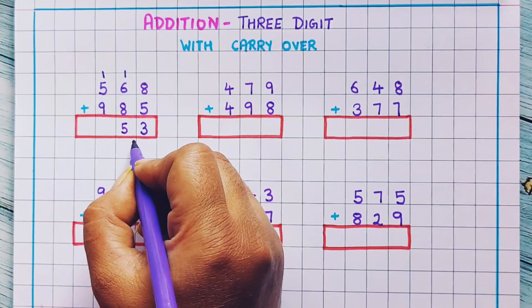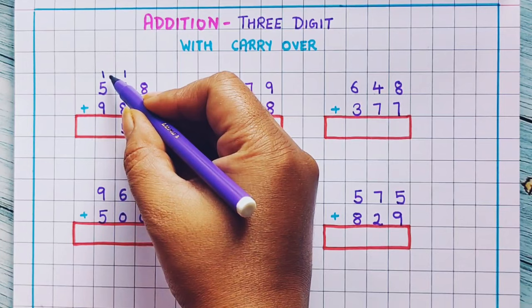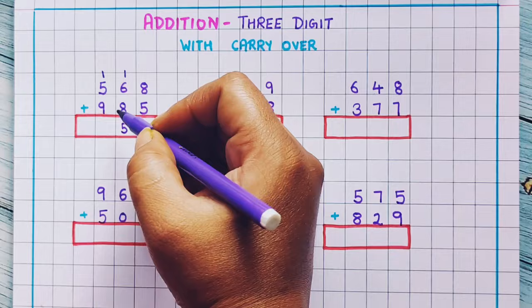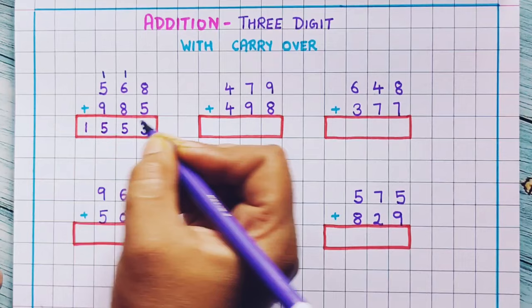Now 9 plus 5 plus 1 for the hundreds place. 9 plus 1 is 10, and 10 plus 5 is 15. So here I will write 1 and here I will write 5. So the answer is 1553.